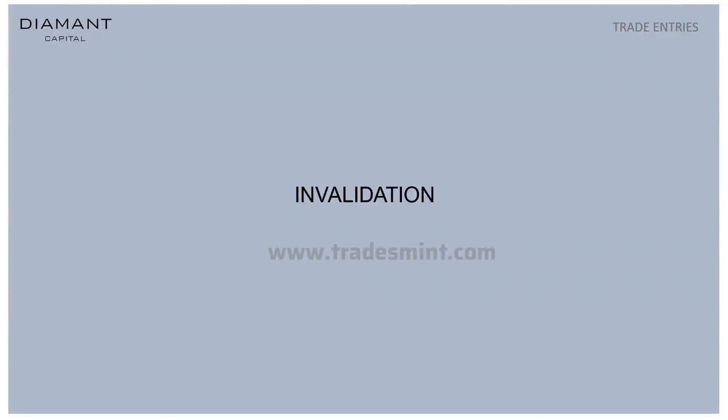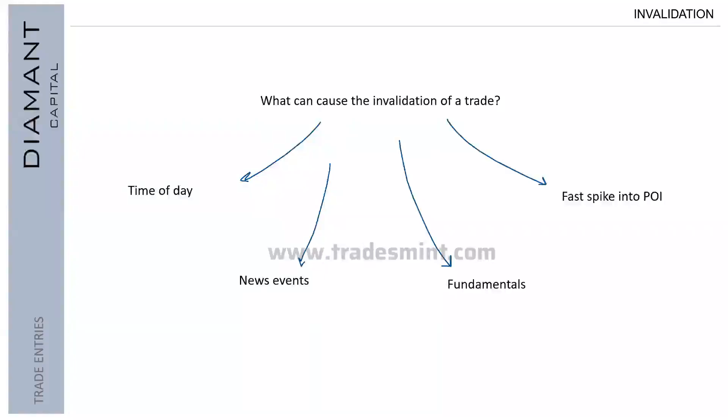Welcome to the second video of the third part of the technical course. We're looking at trade entries and trying to get yourself into the market. One of the key things to look at is invalidation — how do you know when you should not enter a setup? It might meet your criteria, but there are certain things that hint towards that setup not being perfect. So what causes the invalidation of a trade?